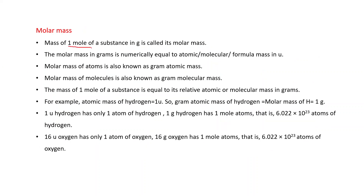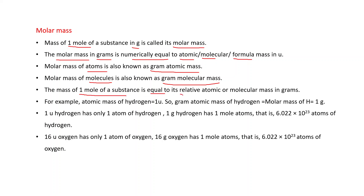Molar mass: the mass of one mole of a substance in grams is called its molar mass. The molar mass in grams is numerically equal to atomic, molecular, or formula mass in U. In simple terms, if atomic mass, molecular mass, or formula mass is expressed in grams, then that is called molar mass of the atom, molar mass of the molecule, or molar mass of the formula unit. Molar mass of atoms is also known as gram atomic mass, and molar mass of molecules is also known as gram molecular mass. We simply replace U by g to get the molar mass.